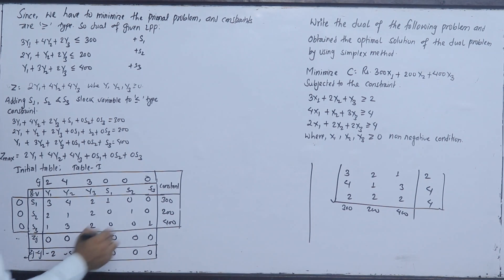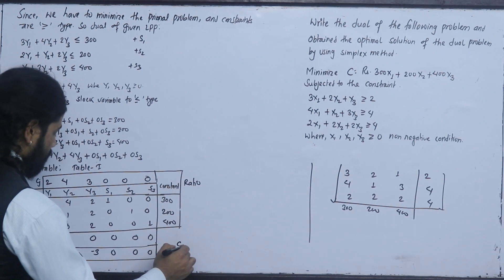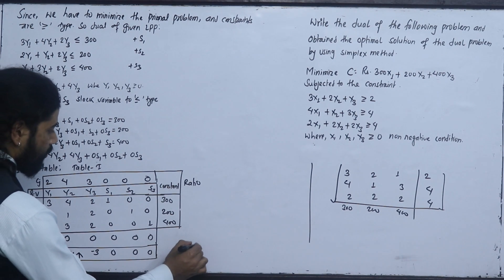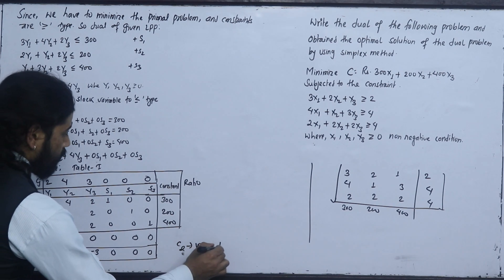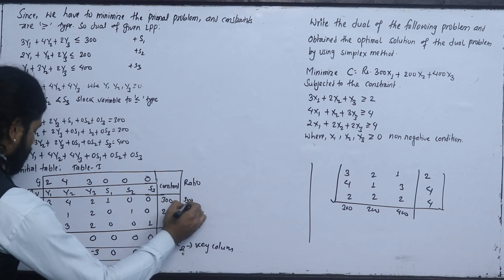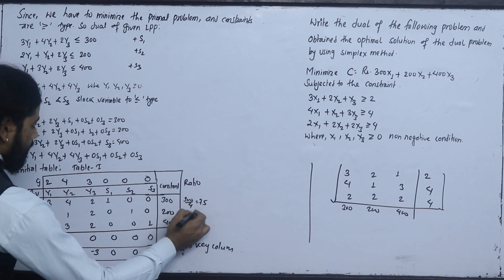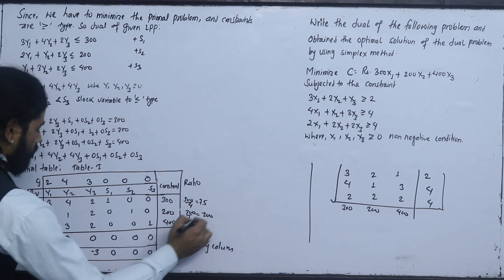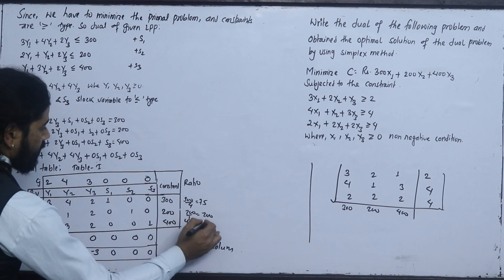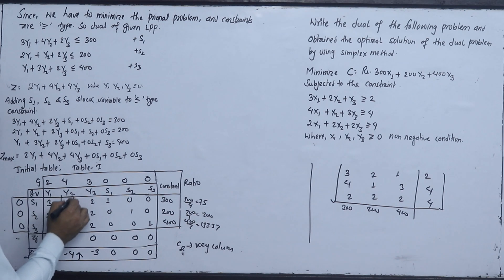Now we apply the most negative condition. The most negative value in the Z-row is 4, so that is our key column. The minimum ratio test gives ratios: 0, 0.5, and 3.333. So we identify the key column and the leaving variable accordingly.